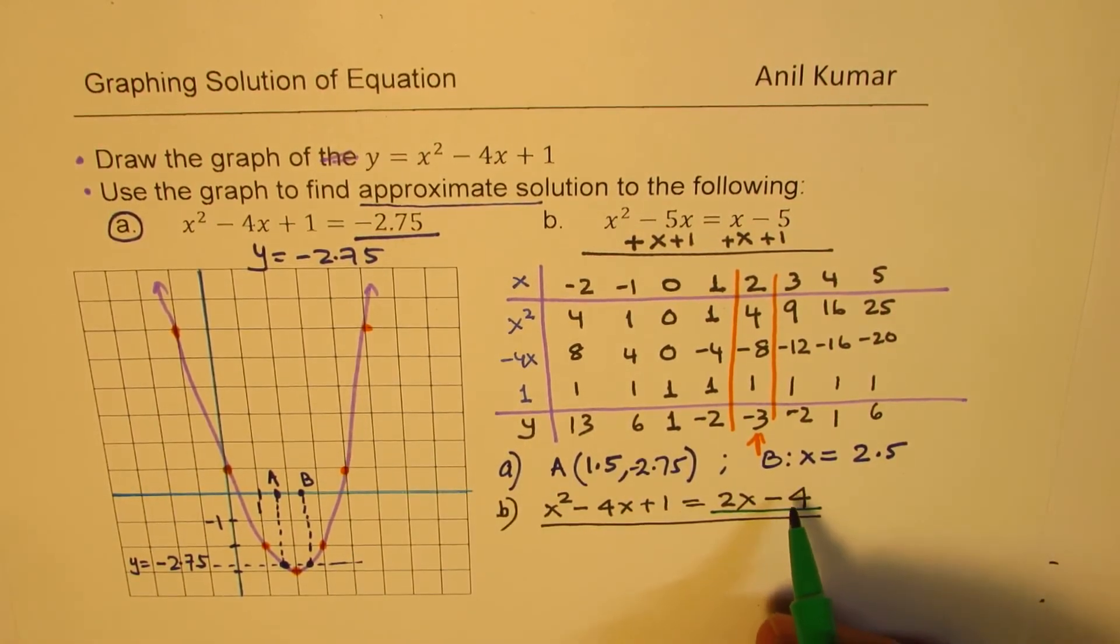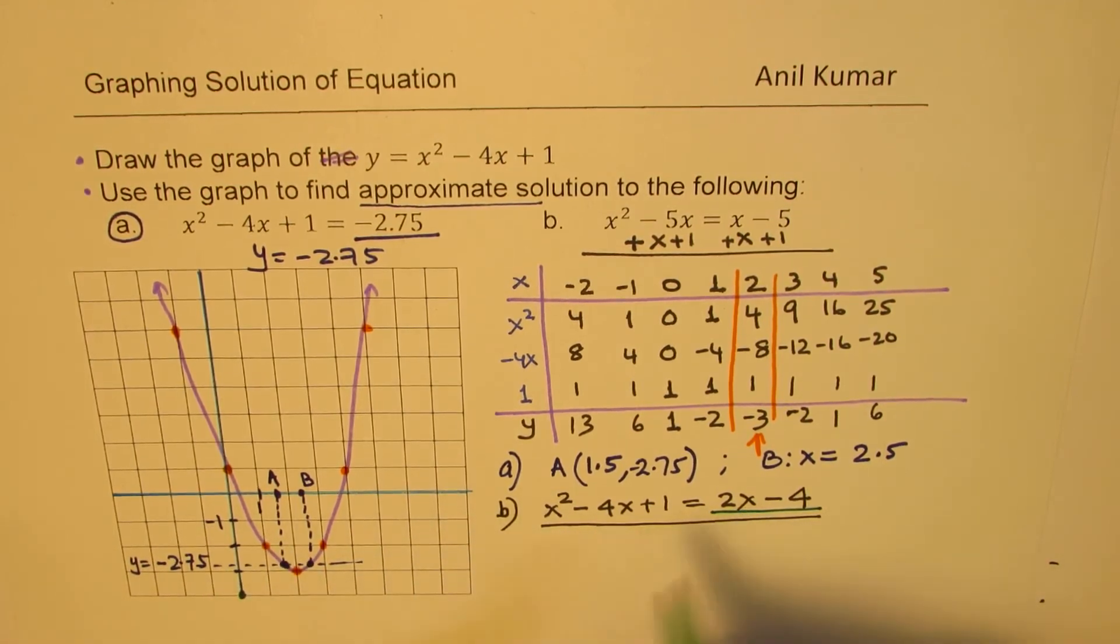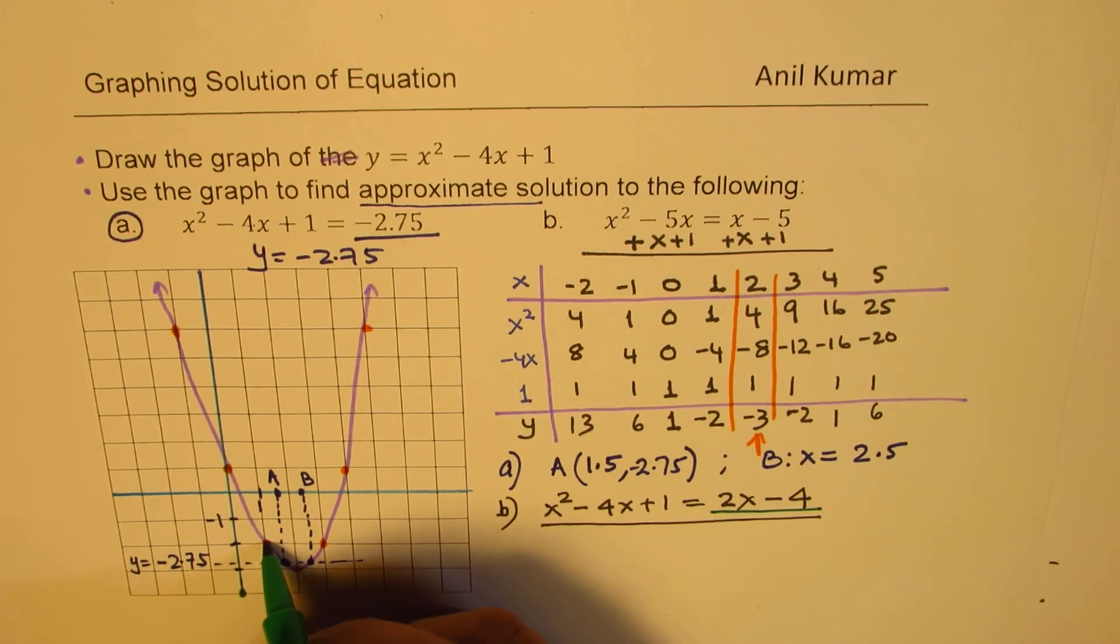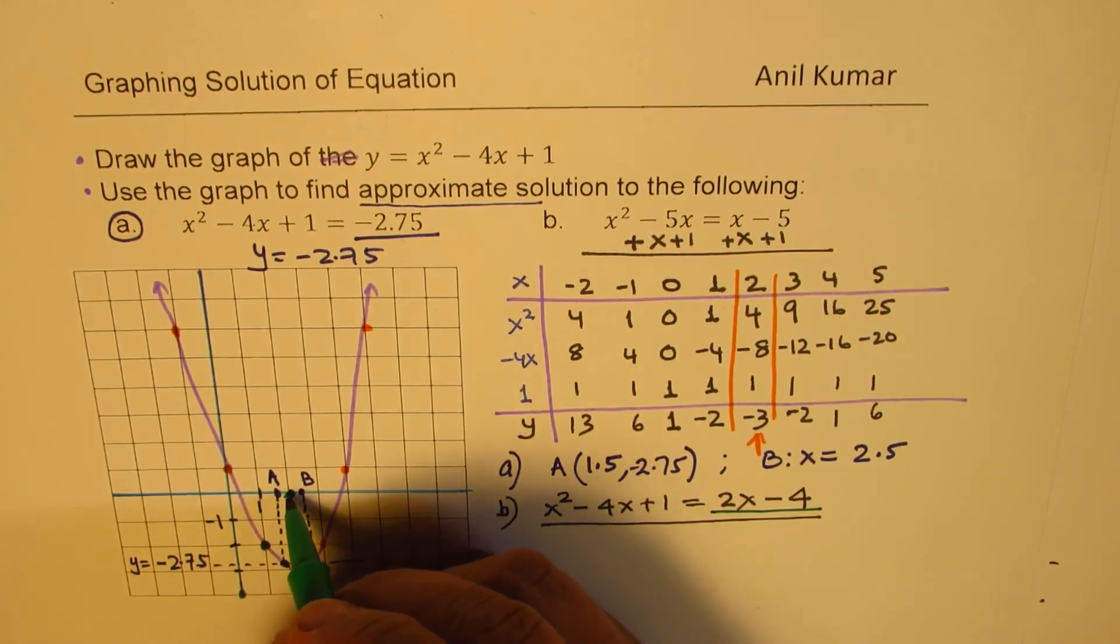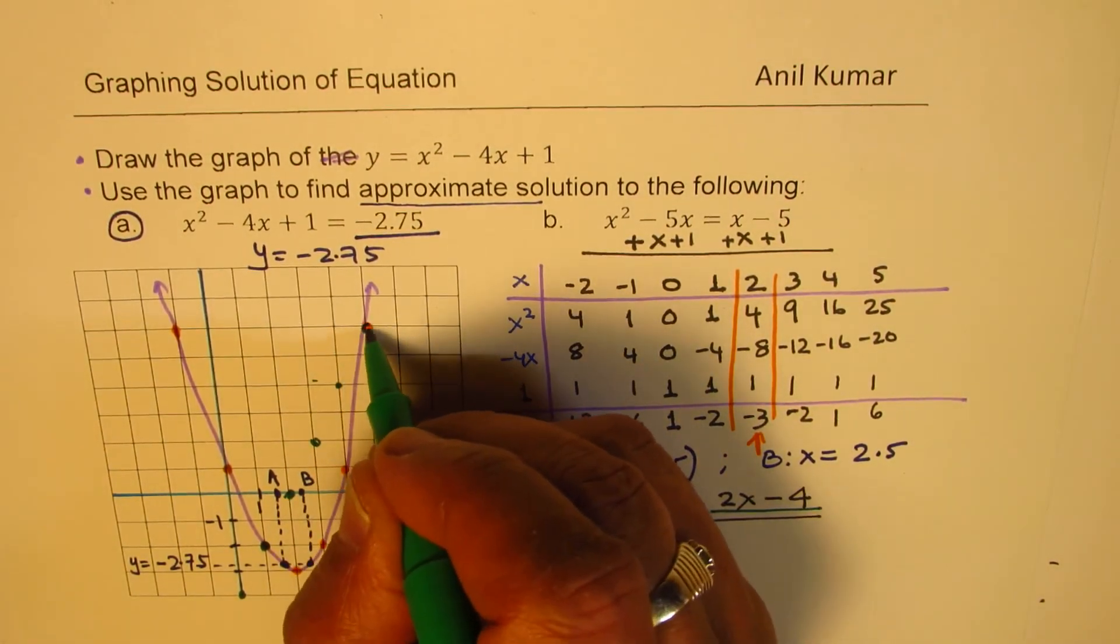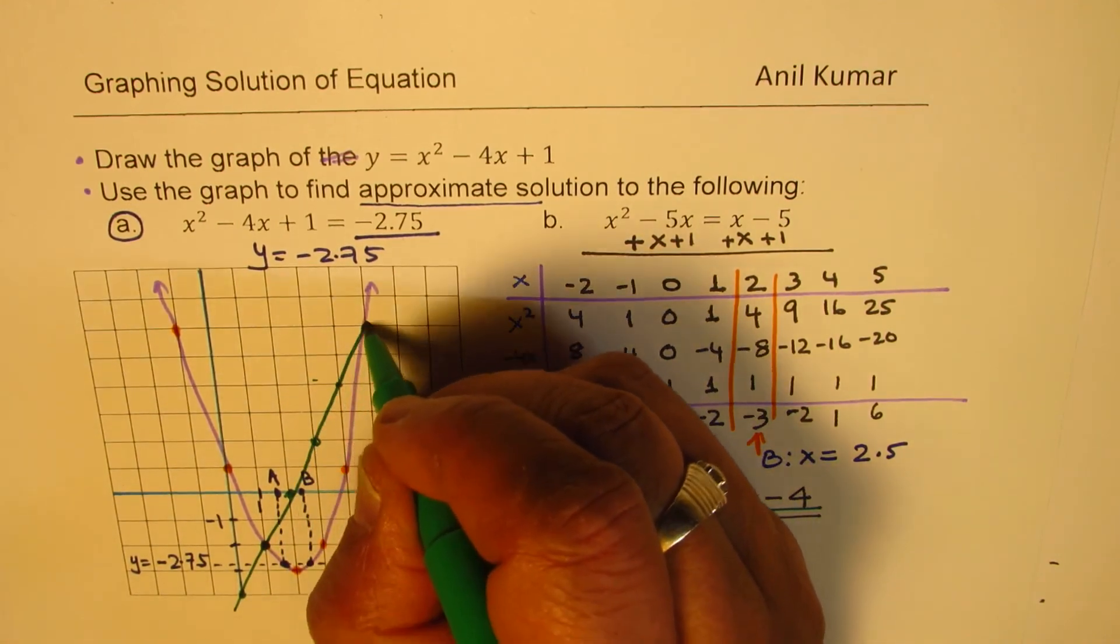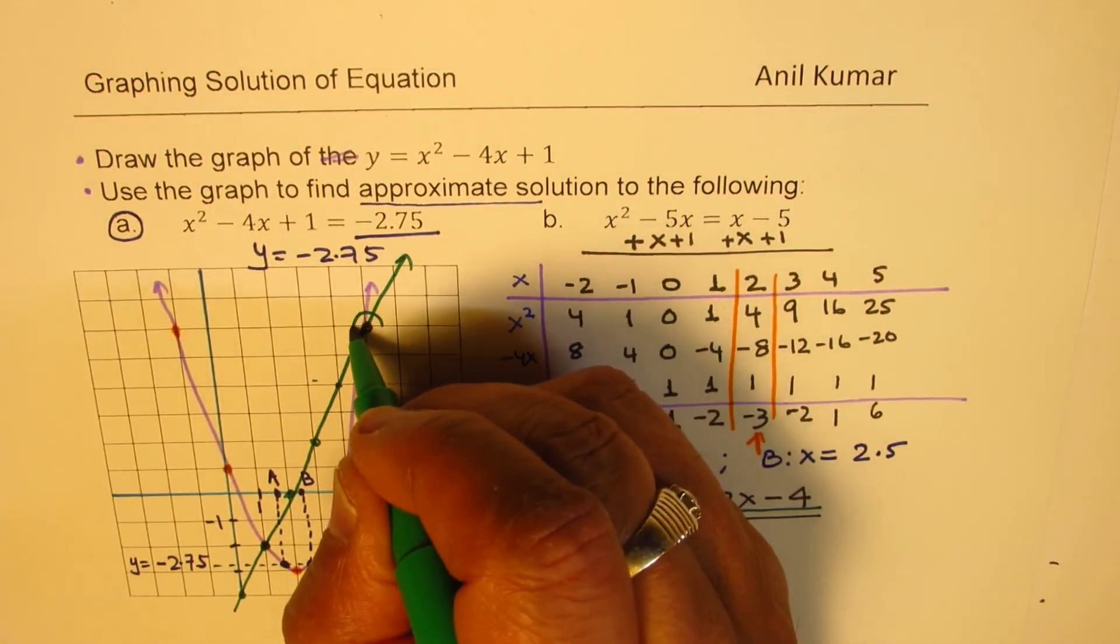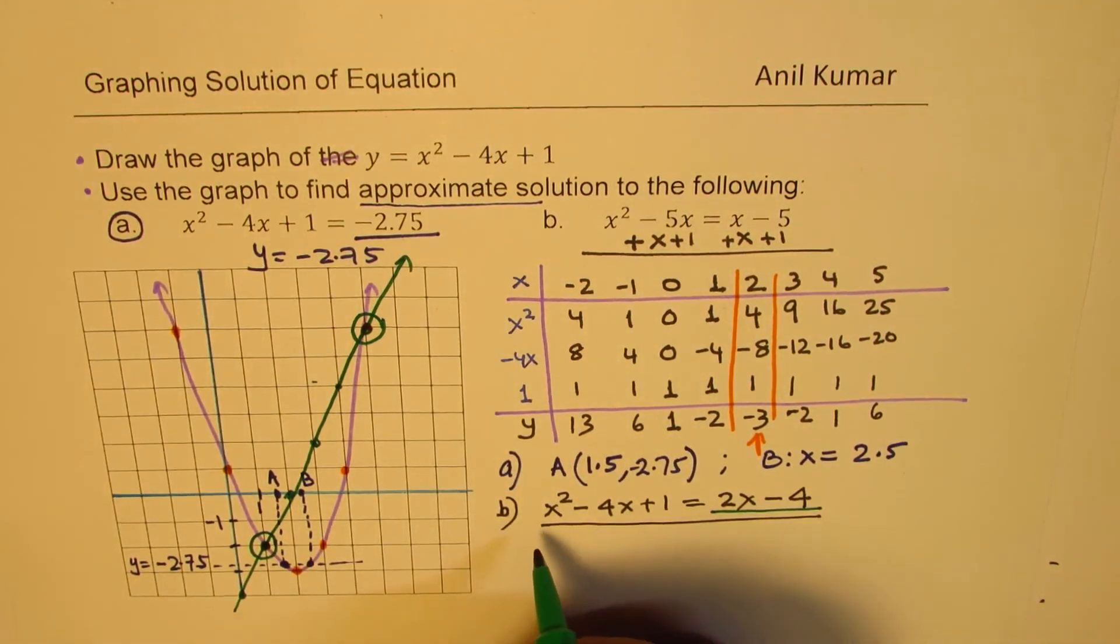So now we'll sketch the line y equals 2x minus 4 on the same graph. Minus 4 is the y-intercept, 1, 2, 3, 4. And the slope is 2. So rise of 2 and run of 1. So we get this point. Rise of 2, run of 1. Rise of 2, 1. Rise 2, 1. Rise 2, 1. So we get these two points. So if I draw this line, these are my solutions, do you see that? So I get two solutions here.